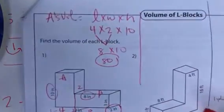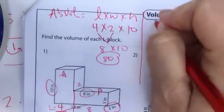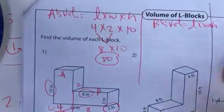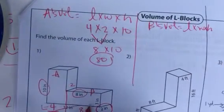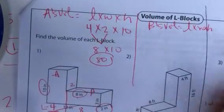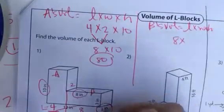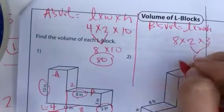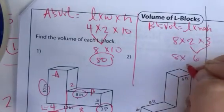And now I'm going to find box B's volume. So, B's volume equals length times width times height. So, B's length is 8. The width is 2. The height is 3. 2 times 3 is 6, and 8 times 6 is 48.